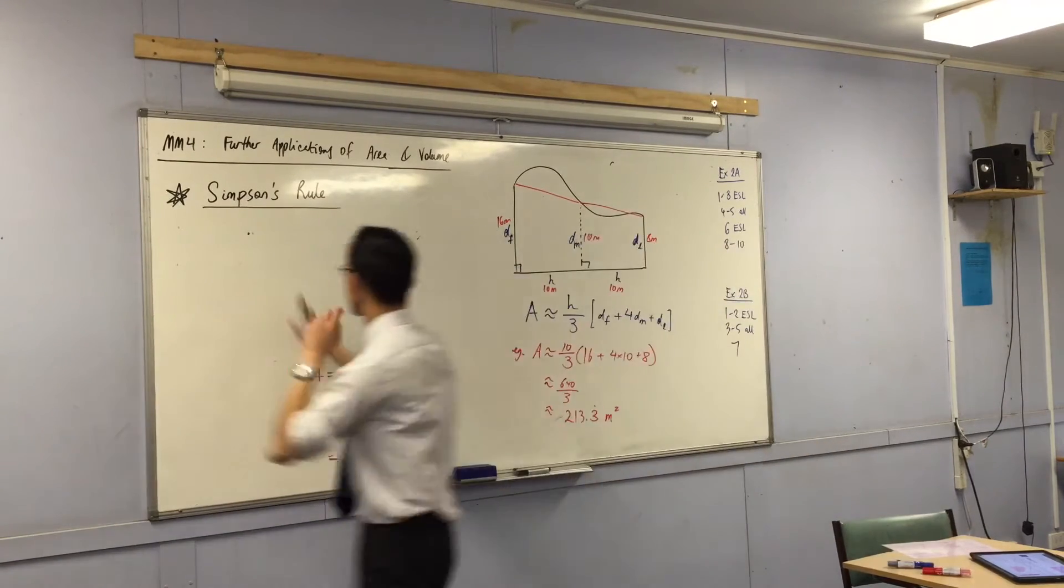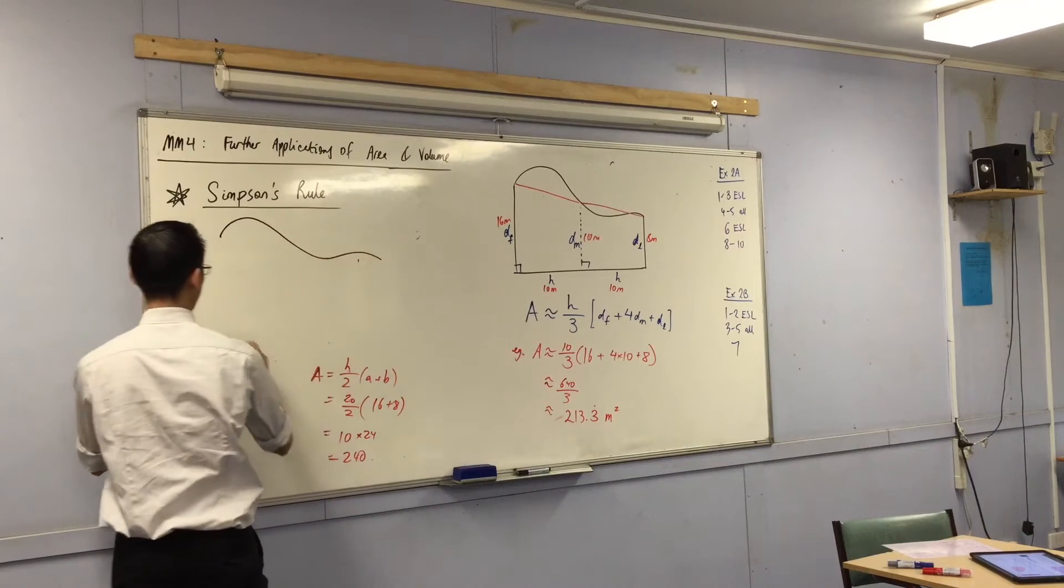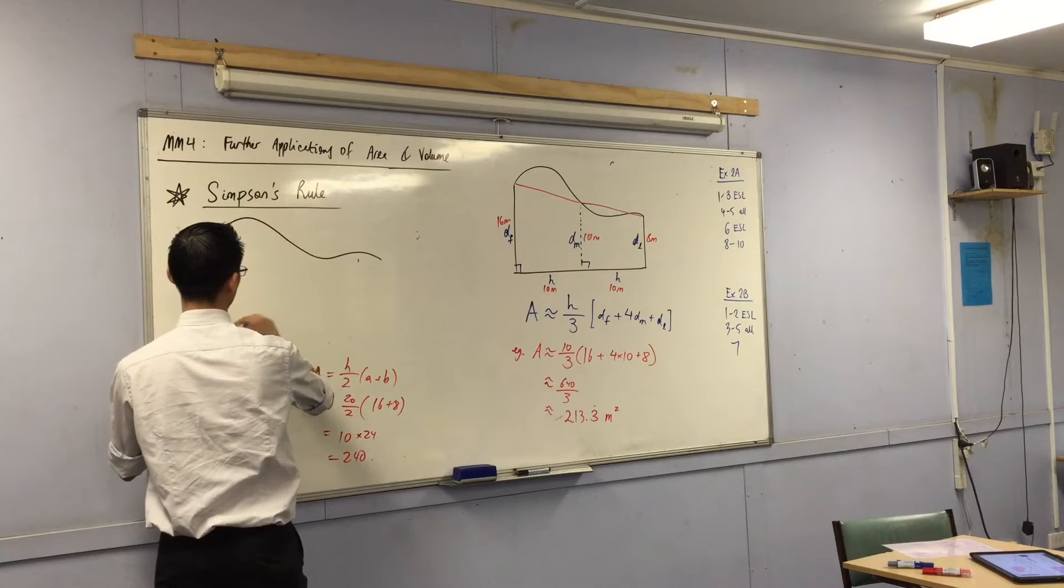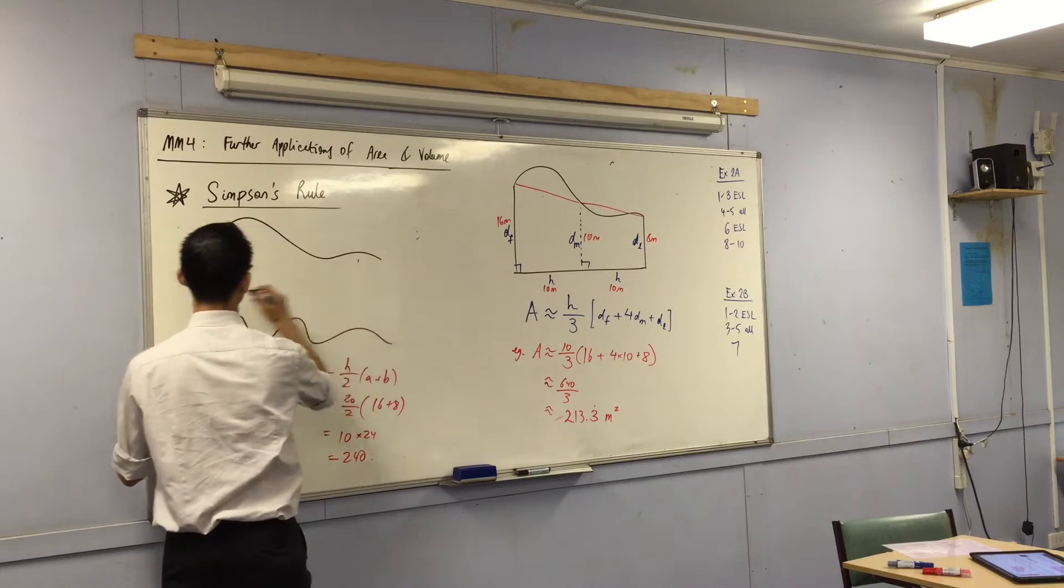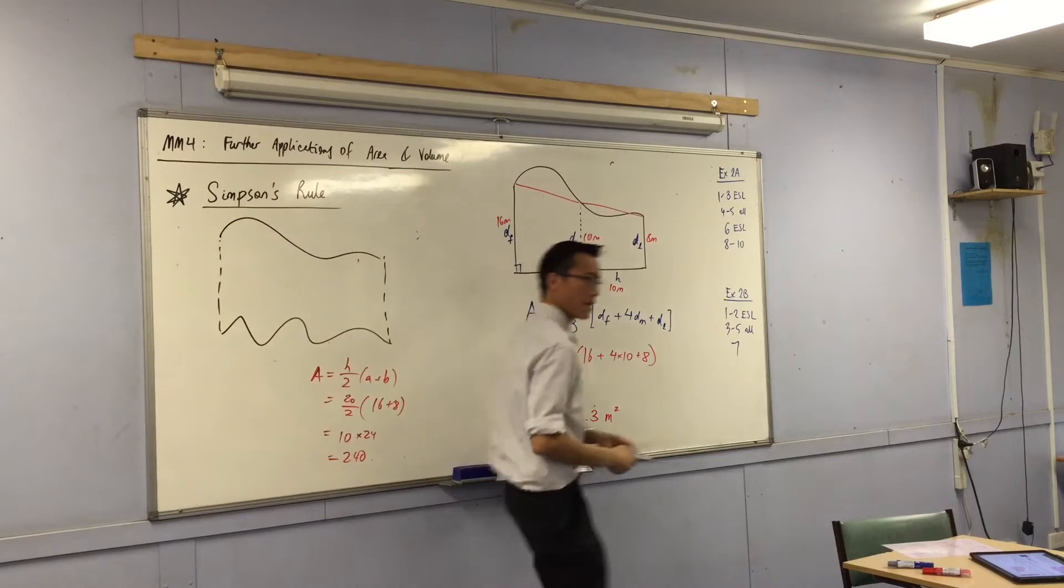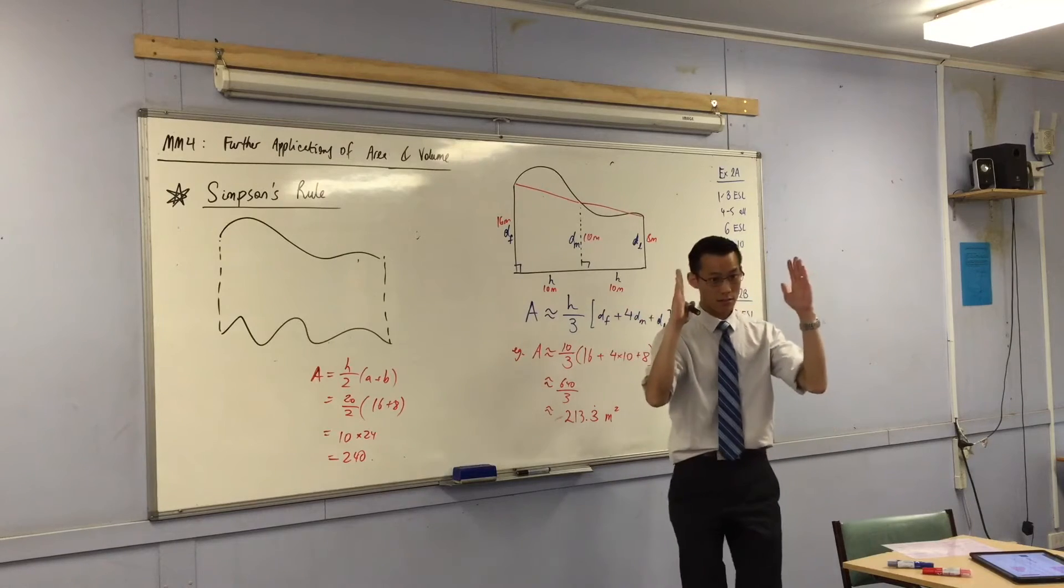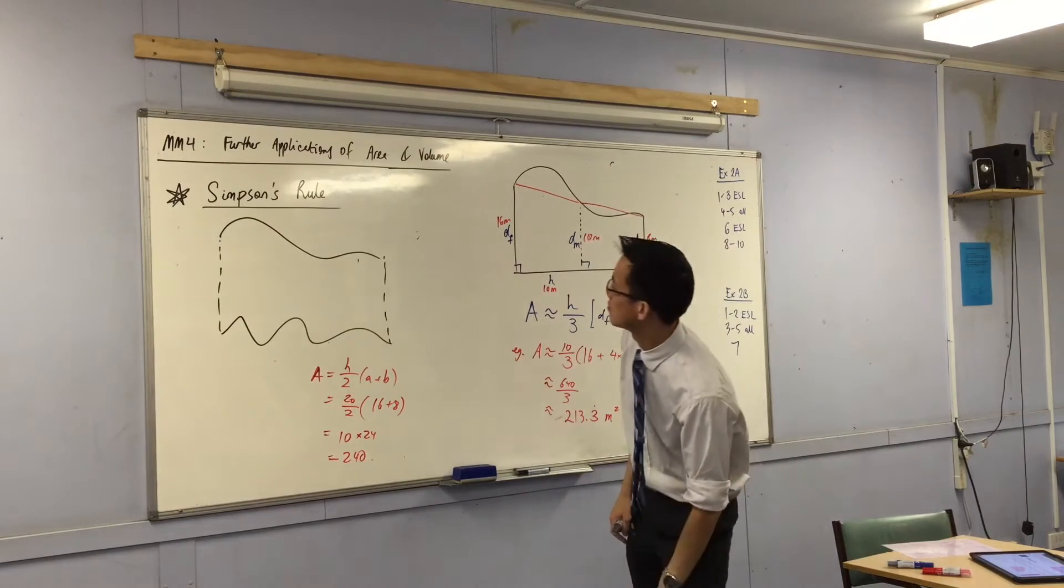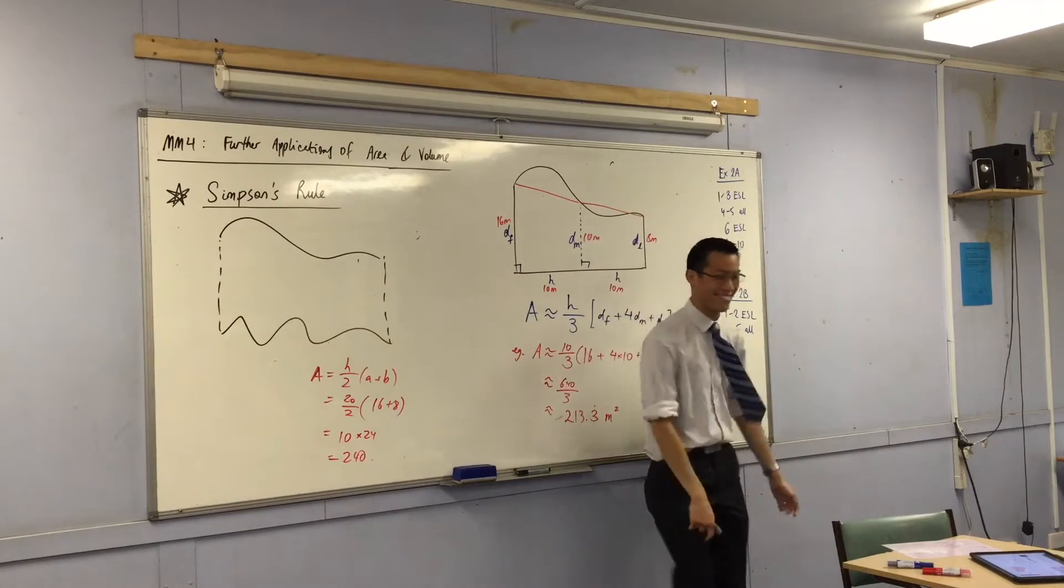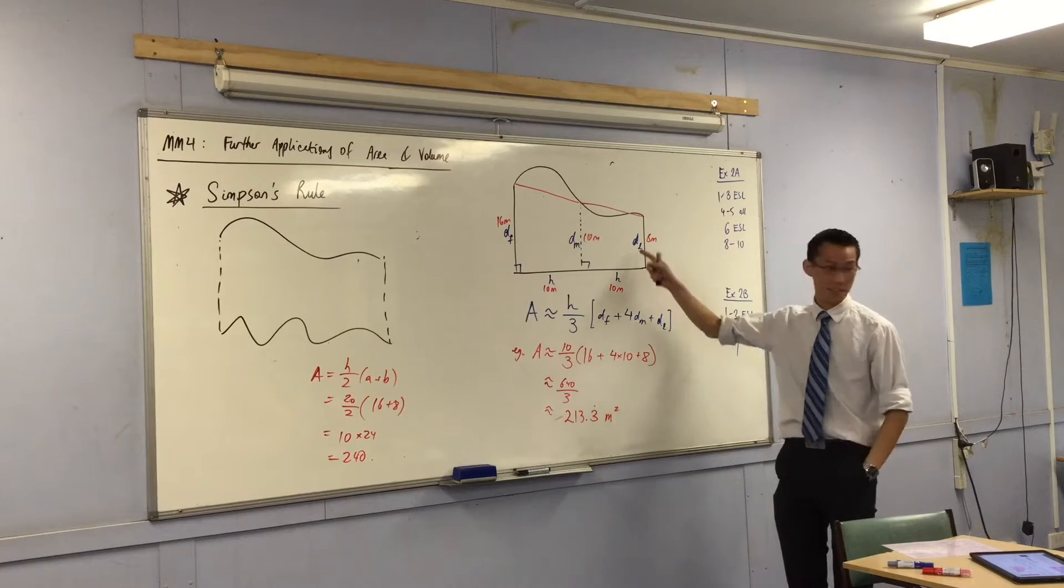But I want it to look like this. [draws irregular shape] Okay, now, are they meant to be parallel? The two straight lines? Yeah. Roughly? Yeah, roughly. Now, this is looking decidedly weirder than this guy. Do you agree?